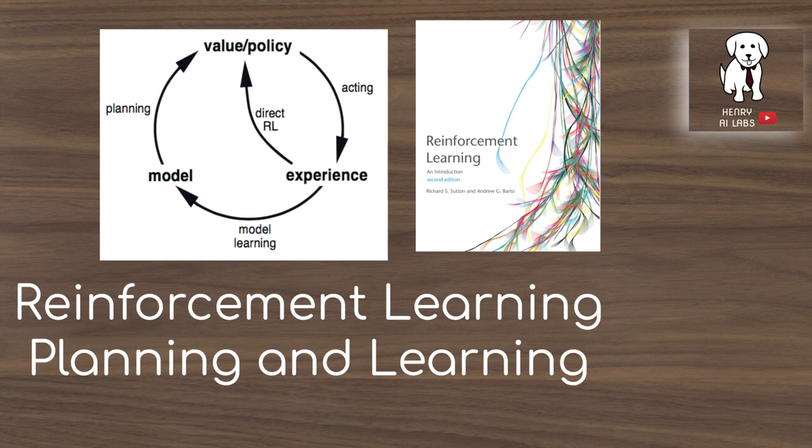Thanks for watching this explanation of planning and learning — chapter 8 of 'An Introduction to Reinforcement Learning' by Richard Sutton and Andrew Barto. Hopefully you took away the distinction between planning and direct learning, background planning using the model to update value functions and policy, and decision-time planning for making immediate decisions. Stay tuned for chapters 9 through 17, and please subscribe to Henry AI Labs for more deep learning and AI content.